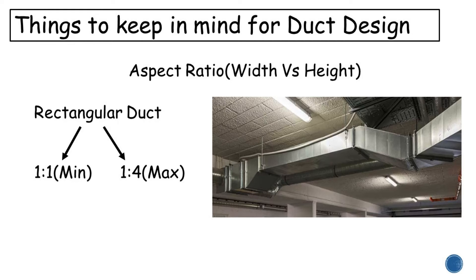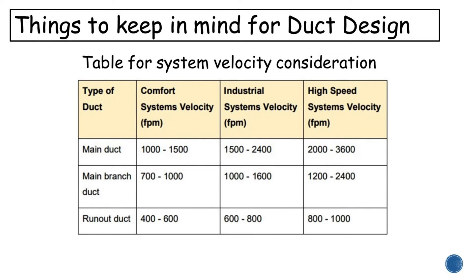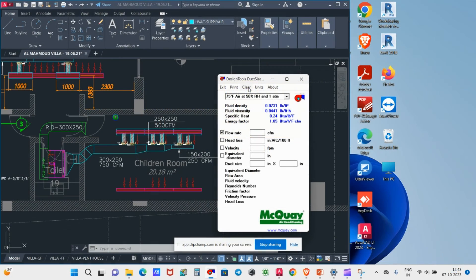The upcoming demonstration shows how to design duct using Mackie Duct Sizer. I considered an airflow rate of 750 CFM and the calculation method is the equal friction method. After opening the duct sizer, you have to set the air properties and units. Since the application is residential, I considered 1000 FPM as the velocity.